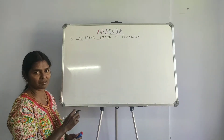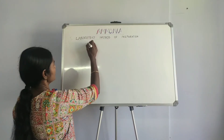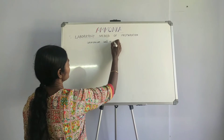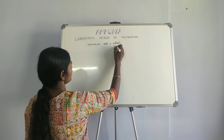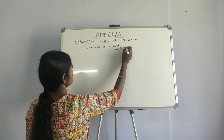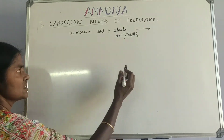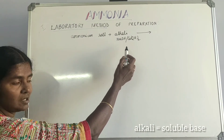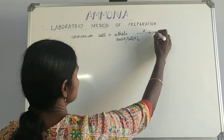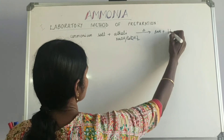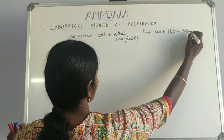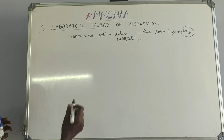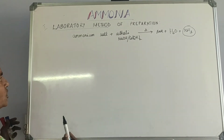The first method is the laboratory method. The rule is that any ammonium salt can react with an alkali — preferably NaOH or calcium hydroxide. What is an alkali? An alkali is a base that is soluble; in other words, soluble bases are called alkalies. When they are heated, it releases a salt, water, and ammonia. This is the basic rule: any ammonium salt reacts with an alkali to give you salt, water, and ammonia.